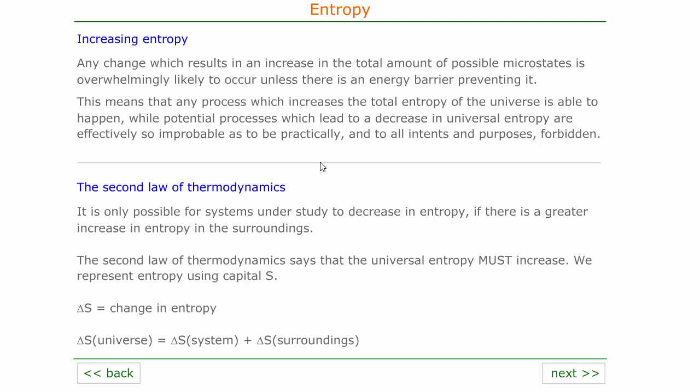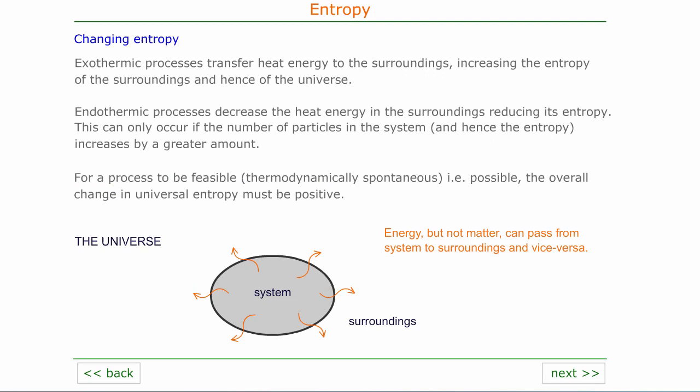We represent entropy by the capital letter S, and the change in entropy is represented by delta S. The delta S of the universe must be made up of delta S of the system plus the change in entropy of the surroundings.